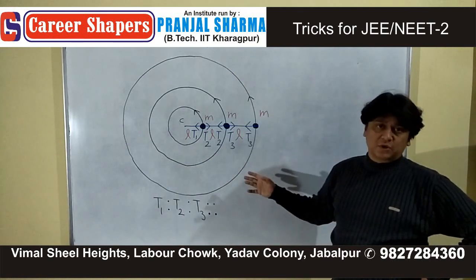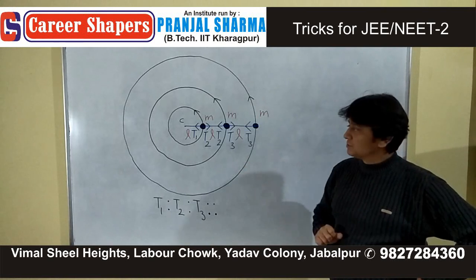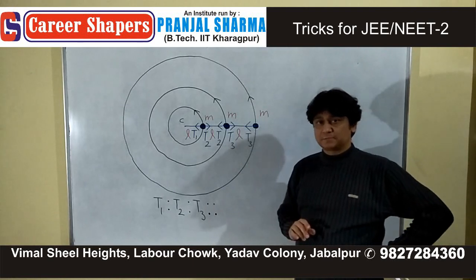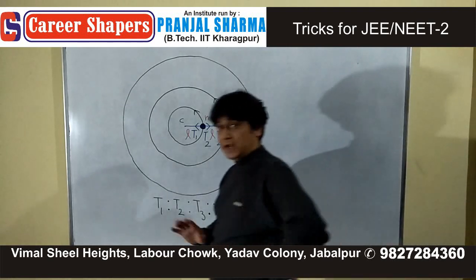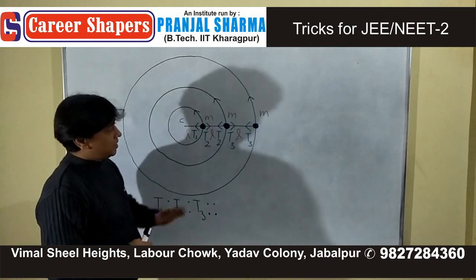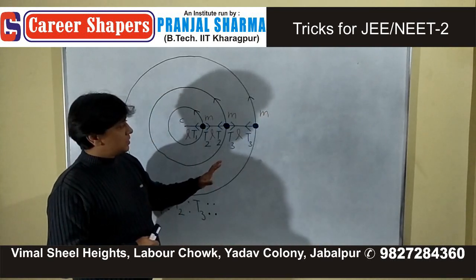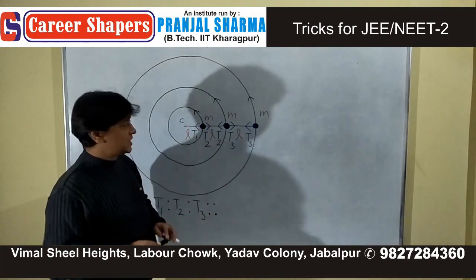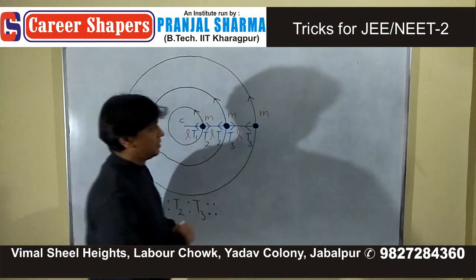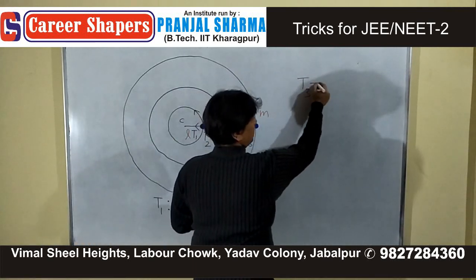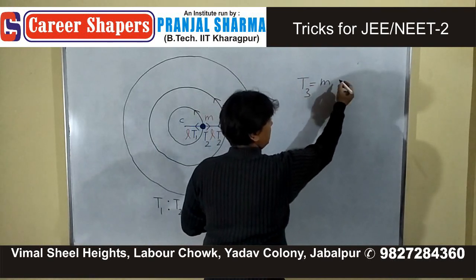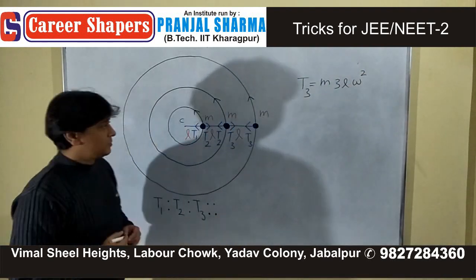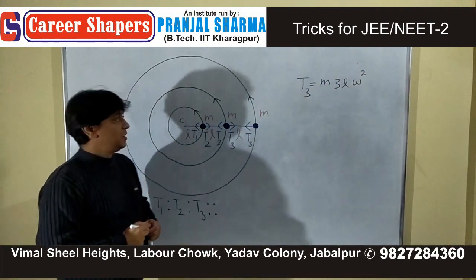With the proper method it will take around two to three minutes, but if you use the trick you can answer the question in just 10 seconds. If someone uses the proper method, they would say T3 provides centripetal force equal to m times 3l times omega squared.